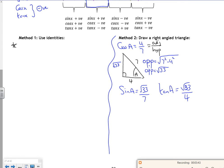I'll show you the other way. So I'm going to use sine squared A plus cos squared A is 1. So cos A is 4 over 7, so cos squared A is 4 over 7 squared. So I've got sine squared A plus 16 over 49 is 1.